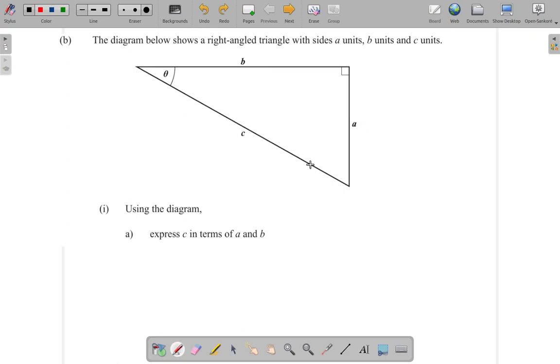C is far from the right angle, so C is the hypotenuse.